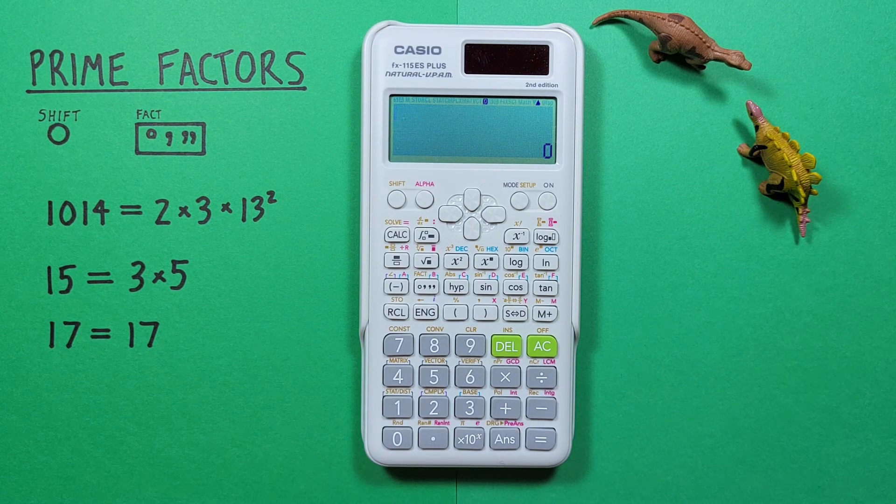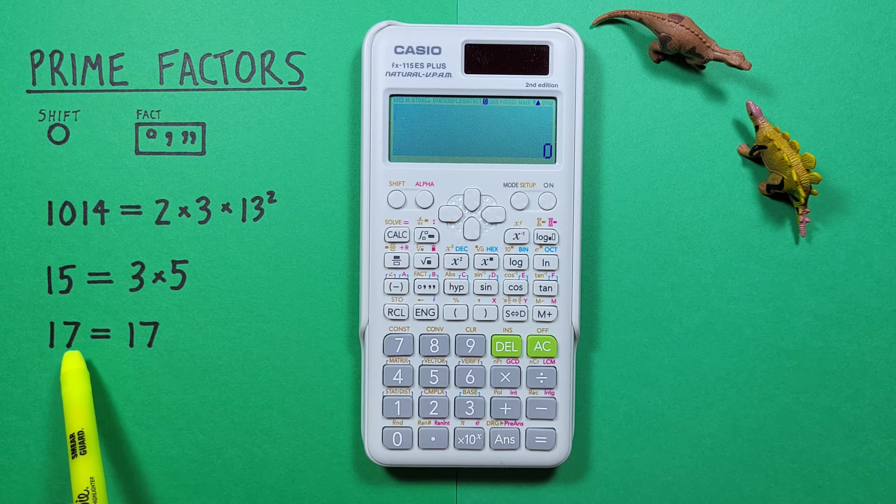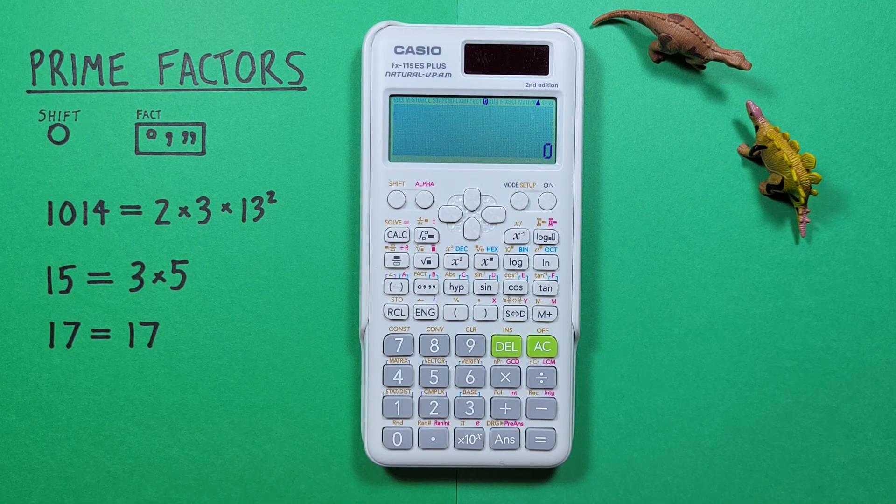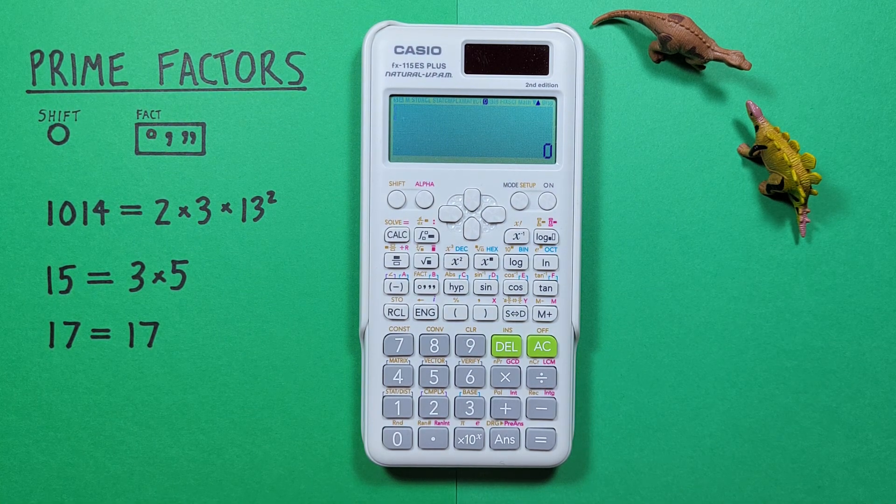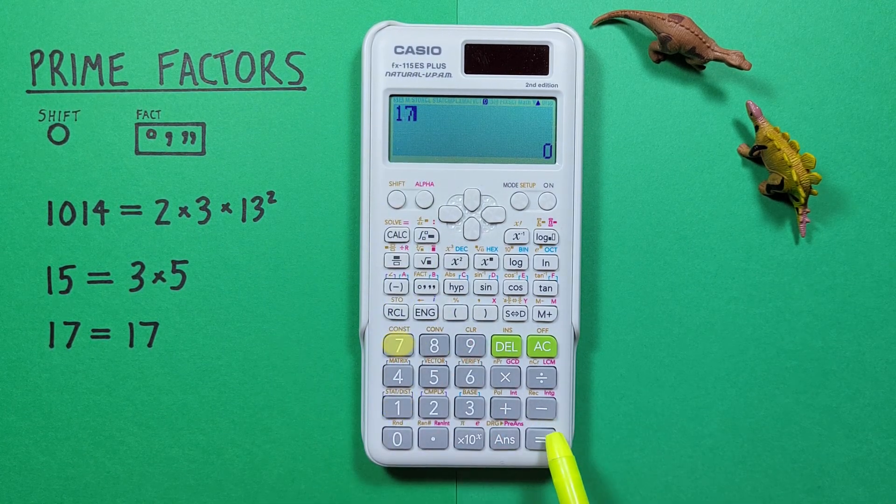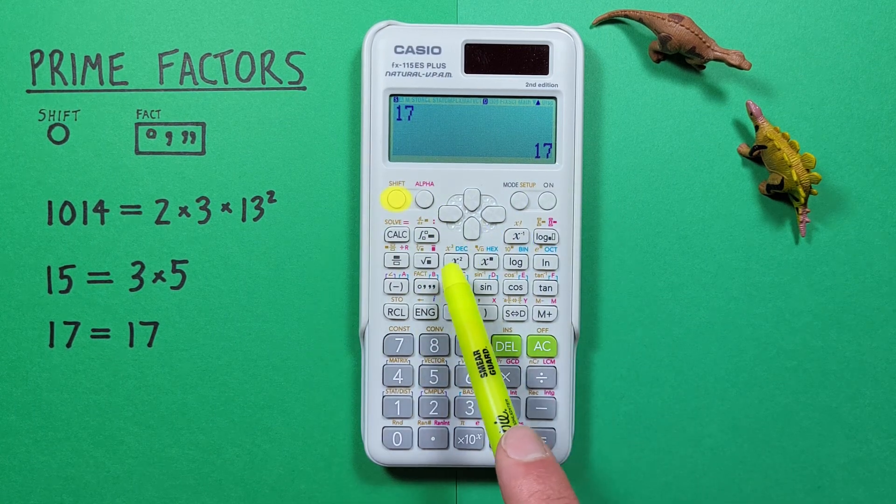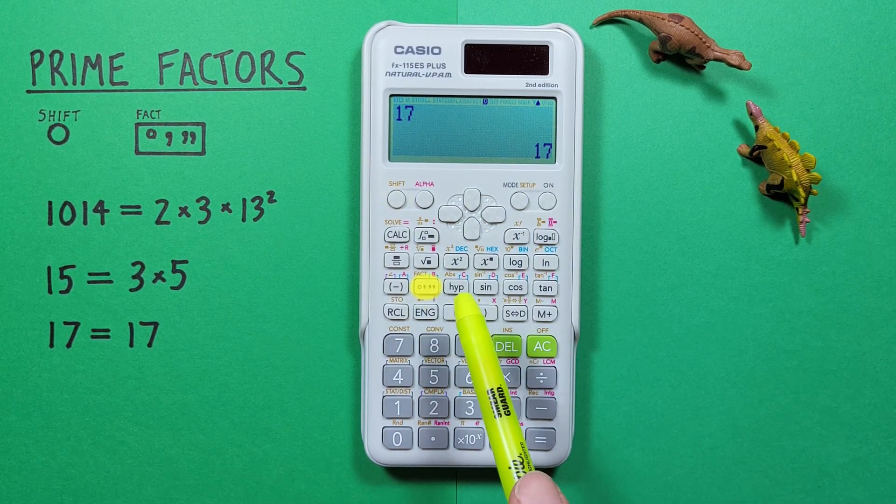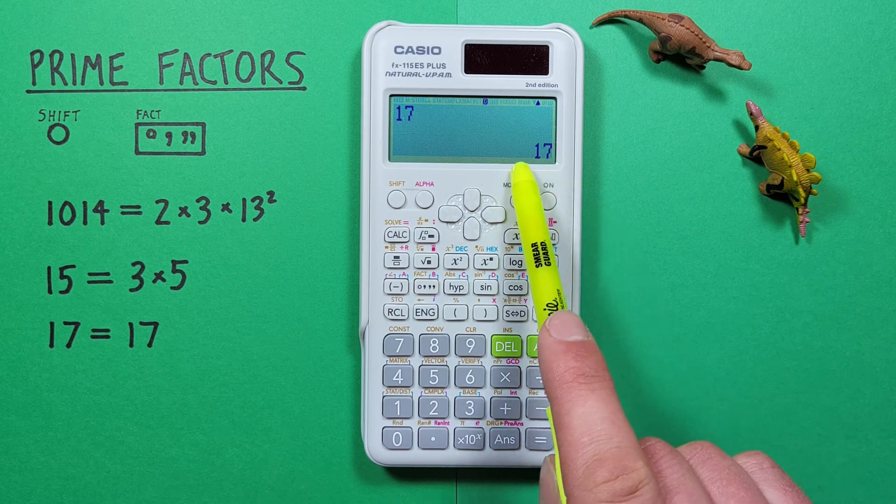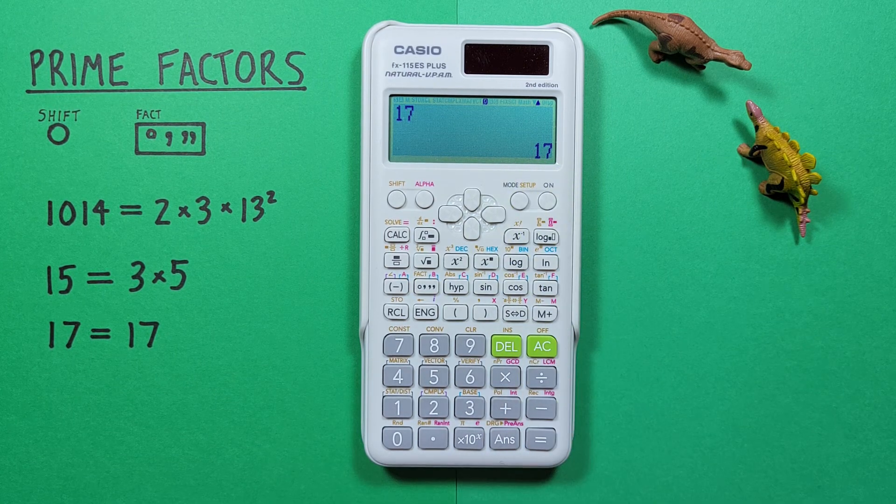We can also use this function to tell if a number is prime. Let's say we had 17 and wanted to find out if that was a prime number or not. To do that, we hit 17 on our calculator, press equals to bring it down to our screen, and then press shift, degree minute seconds. And we see nothing changes. So that tells us 17 is a prime number.